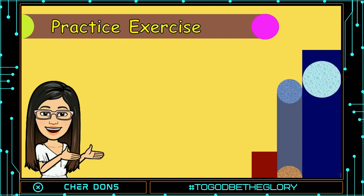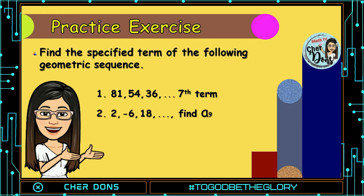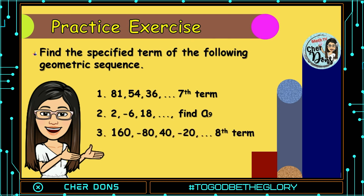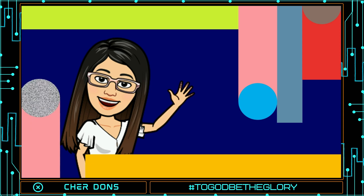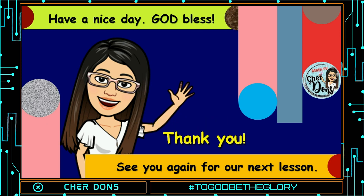Now it's your time to practice. Find the specified term of the following geometric sequences. Number 1: 81, 54, 36, and so on — solve for the 7th term. Number 2: 2, −6, 18, and so on — find a sub 9. Number 3: 160, −80, 40, −20, and so on — find the 8th term. Don't forget to comment your answers so we can check them. Good luck! I hope you enjoyed our discussion today. See you for our next lesson. Thank you, have a nice day and God bless everyone!